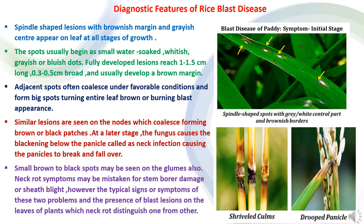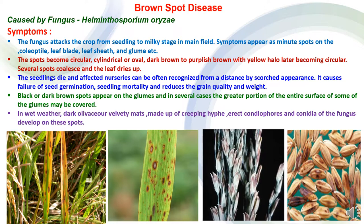For diagnostic study of rice blast disease, the lesions are spindle-shaped with a grey center and bluish margin. These spots appear on leaves at all stages of growth. In the beginning, spots are water-soaked in nature, whitish-grey or bluish in color. Lesion size varies from 1 to 1.5 cm long and 0.3 to 0.5 cm broad, having a brown margin. Adjacent spots merge with each other and form bigger spots in favorable weather conditions, giving the appearance of the entire leaf turning brown — a burning blast. Similar symptoms also occur on nodes, which after coalescing form brown or black patches. Small brown to black spots may also be found on glumes.